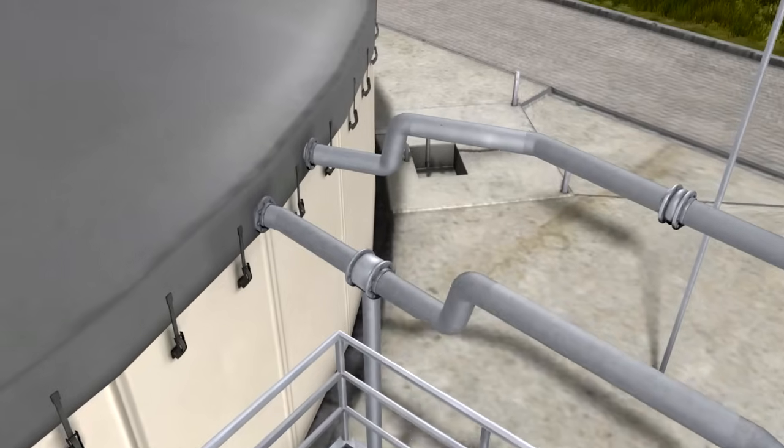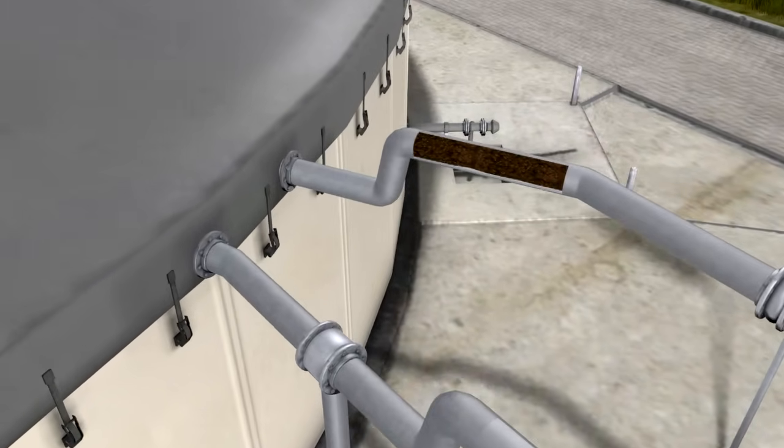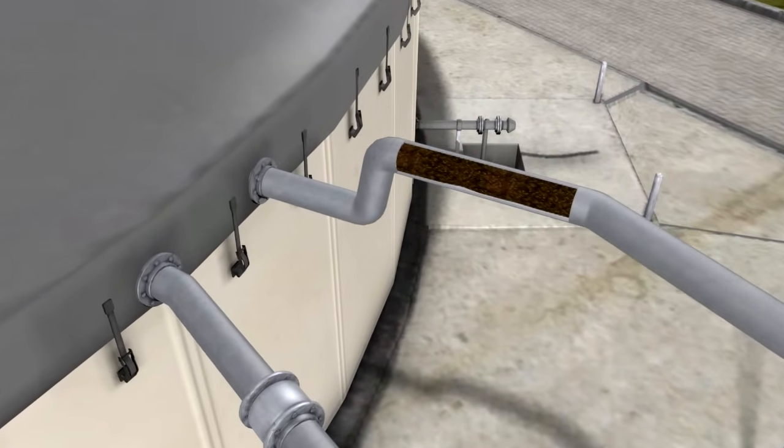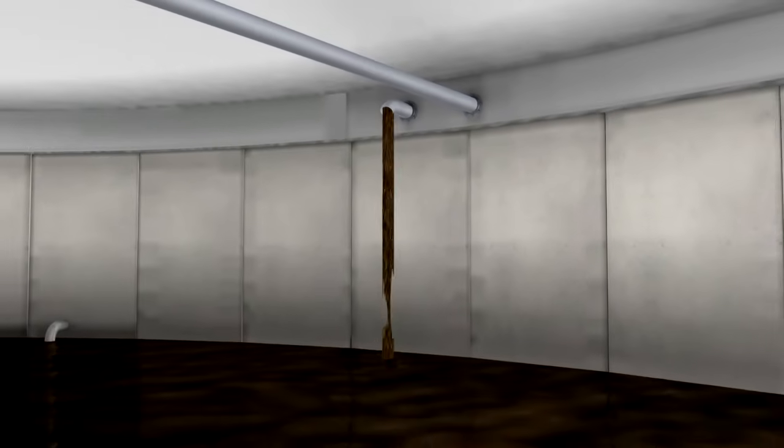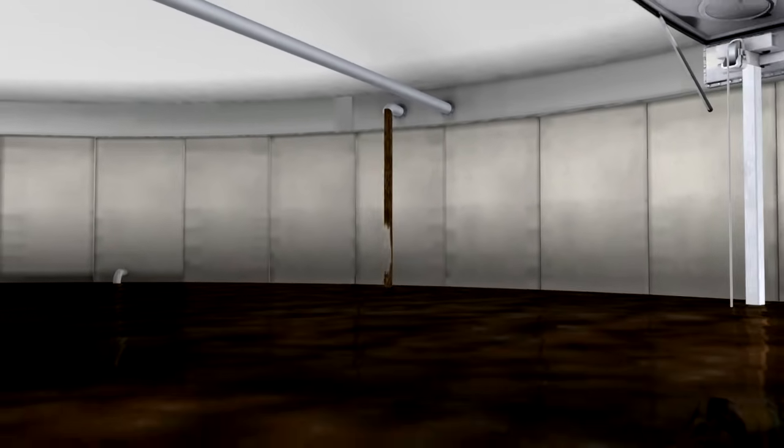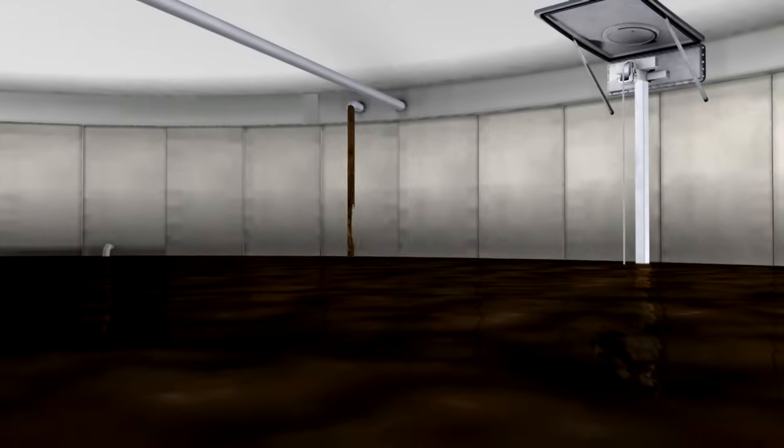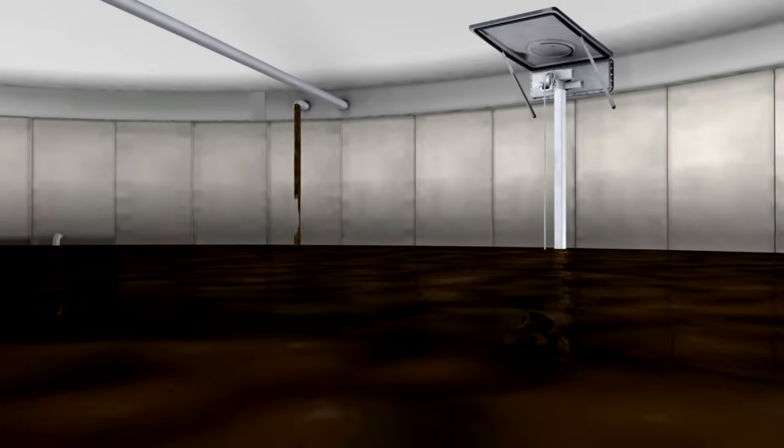The material which is fermented out, the so-called digestate, enters the digestate storage through an overflow line. This container is also equipped with a height-adjustable stirring unit and in Germany comes with a gas-tight roof as standard.